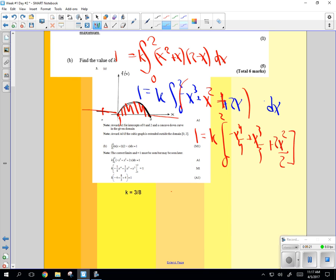So now we just do the work. 1 is equal to k. Put a 2 in first. And you'll get negative 16 over 4 plus 8 over 3 plus 4. What happens when I put the 0s in? Who cares? They're just 0, right?